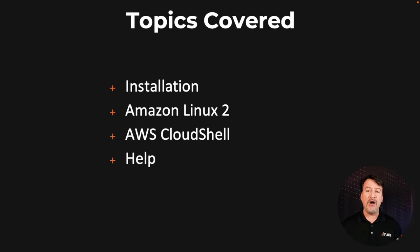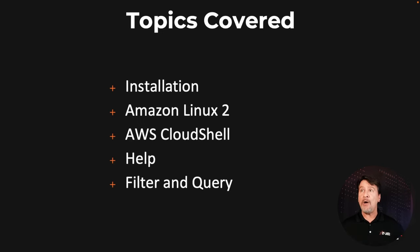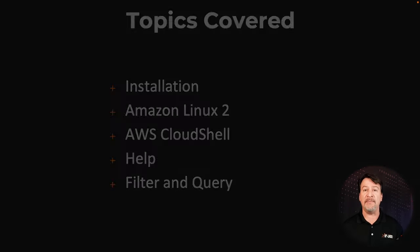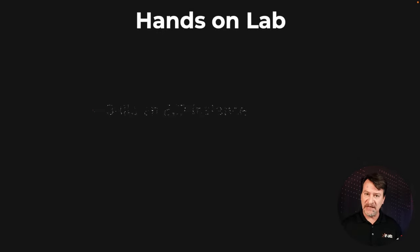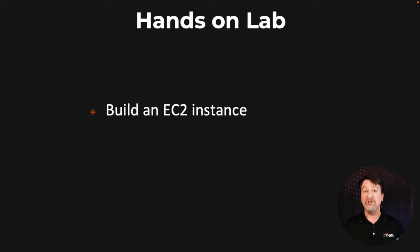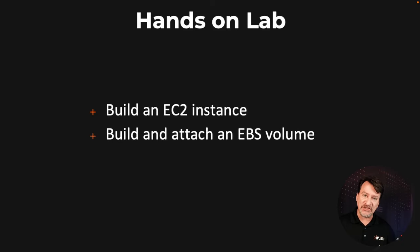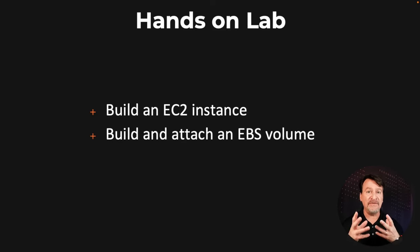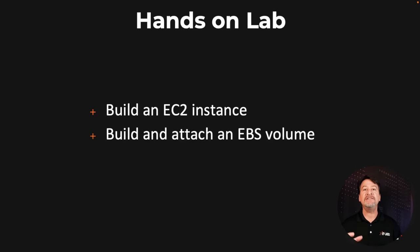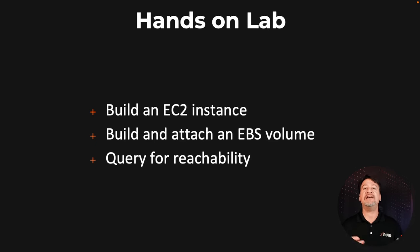Also, help, filter and query, output, and so much more. We've got a hands-on lab: spin up an EC2 instance, create an EBS volume, and attach it to that running EC2 instance. And then finally, using the AWS CLI, query to see if the EC2 instance has passed its reachability test.